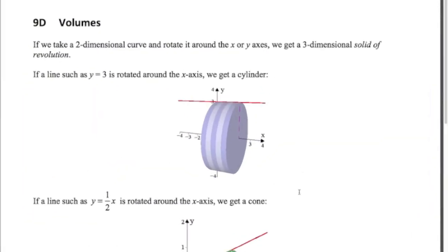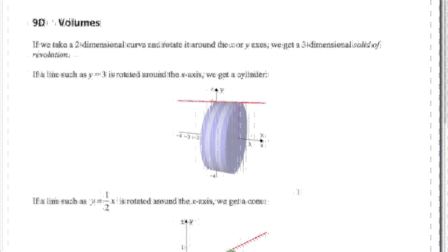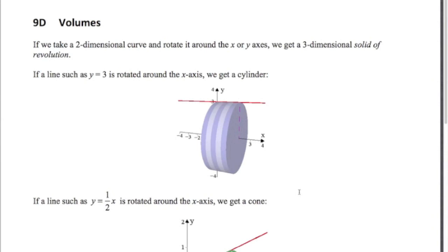Hi and welcome to this last video on integration for the P1 syllabus. In this video we're going to be talking about volumes. We're going to take a two-dimensional curve or line and rotate it around one of the axes. From that we get what's called a three-dimensional solid of revolution, and we're interested in finding out the volume of this solid.